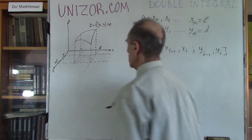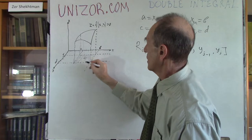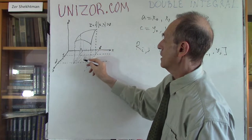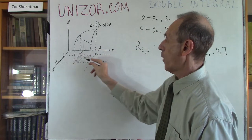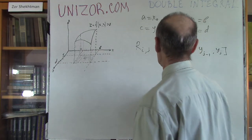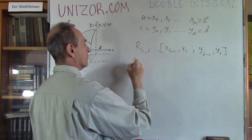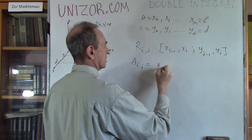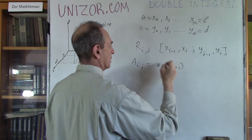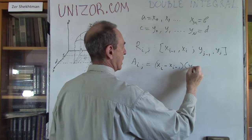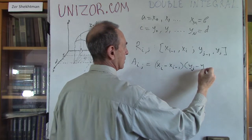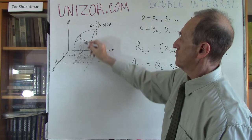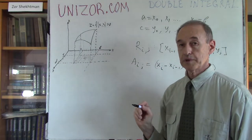This rectangle has its right boundary at x_i and its bottom boundary at y_j. The area of this rectangle is equal to (x_i − x_{i-1}) times (y_j − y_{j-1}). That's the base area of the rectangular parallelepiped I'm going to build.